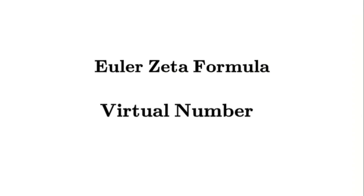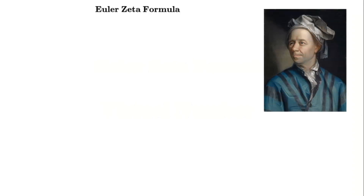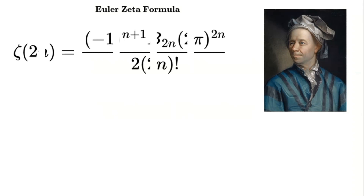First, let's talk about the Euler-Zeta formula. Discovered by the legendary mathematician Leonhard Euler, it gives us a way to compute the values of the Riemann-Zeta function at even positive integers. The formula looks like this: Zeta of 2n equals negative 1 raised to the power of n plus 1, times the Bernoulli number b sub 2n, times 2pi raised to the power of 2n, all divided by 2 times 2n factorial.